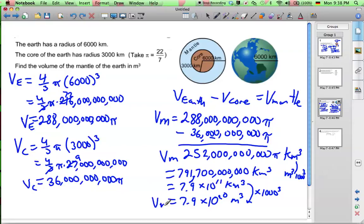So your final answer, the volume of the mantle of the Earth is about 7.9 times 10 to the power of 20 cubic meters.